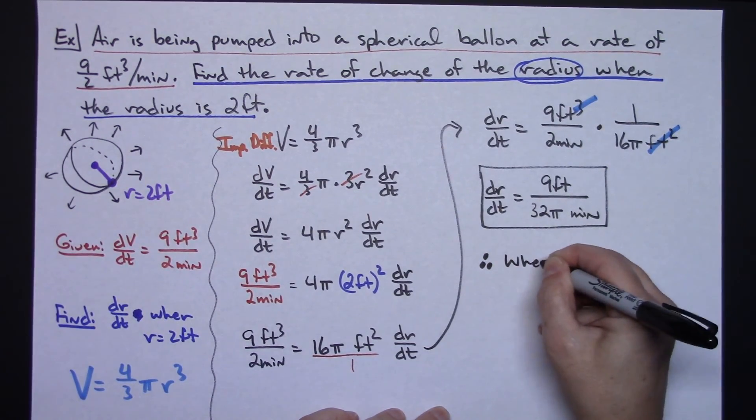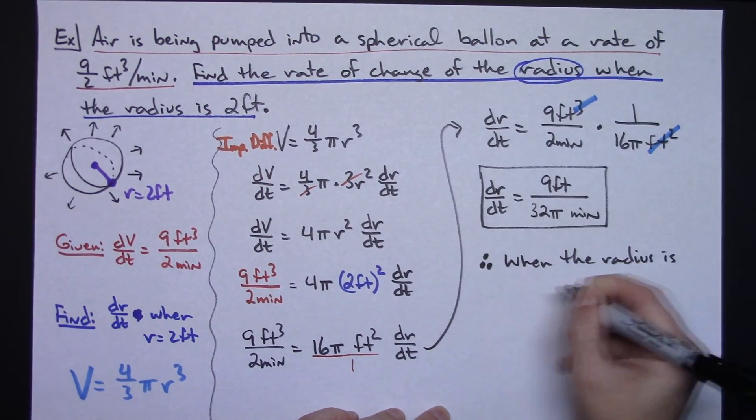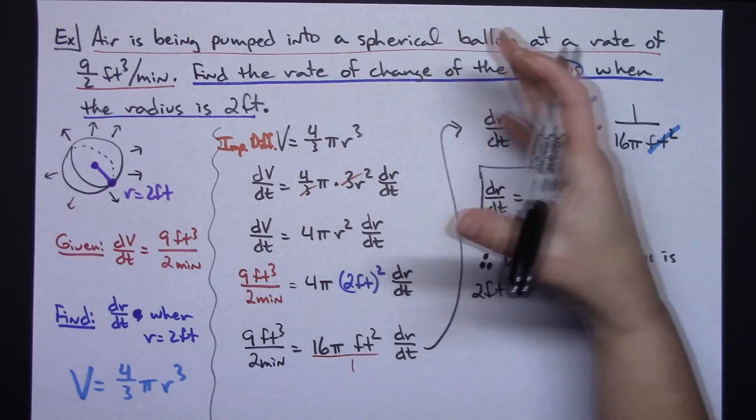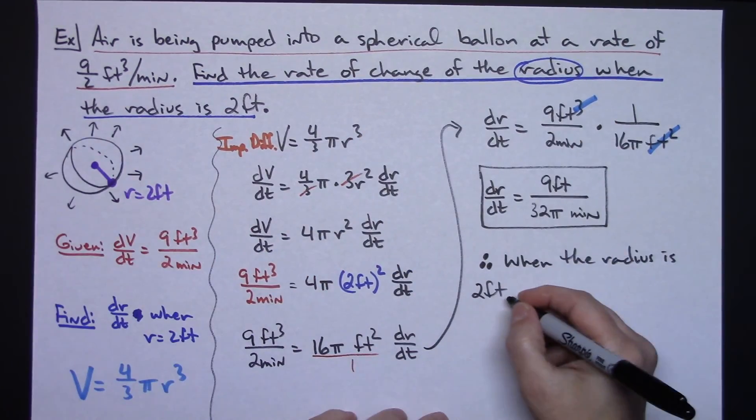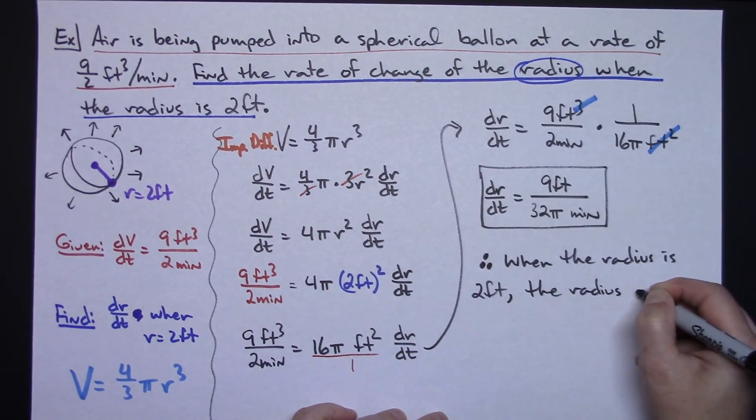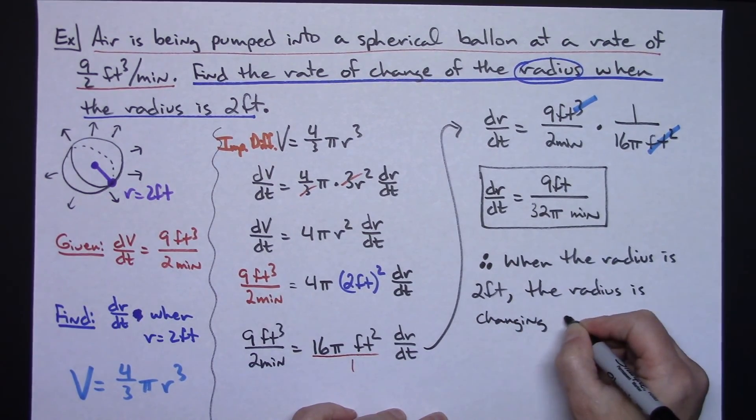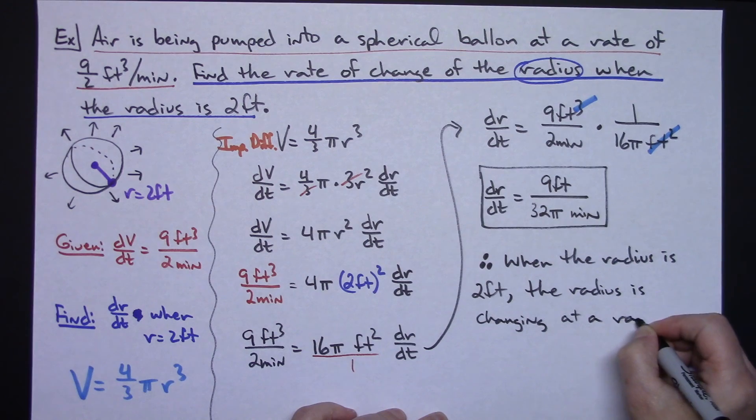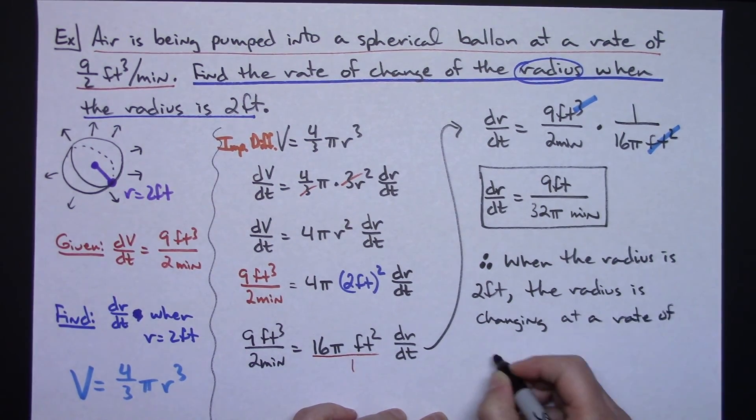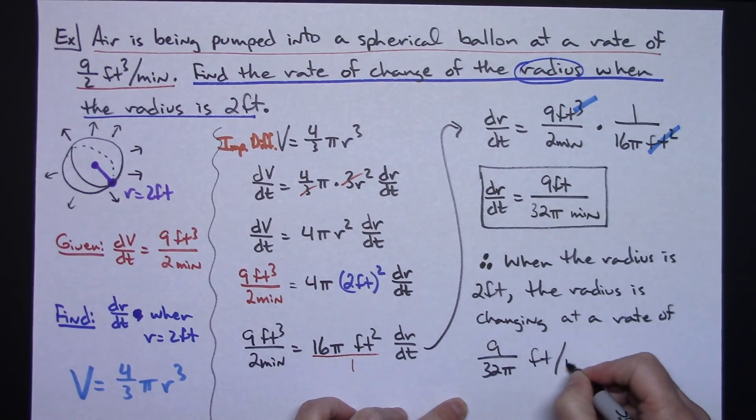when the radius is 2 feet, so at exactly the moment as it's expanding, and that radius gets to 2 feet, the radius is changing at a rate of 9 over 32π feet per minute. So just a nice little summary statement there of actually what's going on.